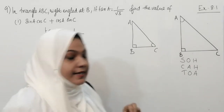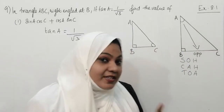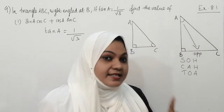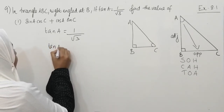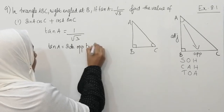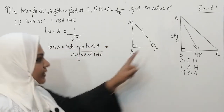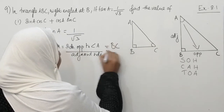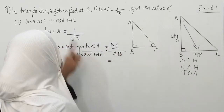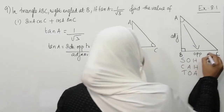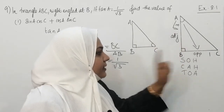Tan means opposite divided by adjacent. The adjacent side is the side which contains the reference angle and the 90 degree angle. So what is tan? It is the side opposite to the reference angle divided by the adjacent side. The side opposite to angle A is BC, and the adjacent side is AB. So BC is 1 and AB is root 3.